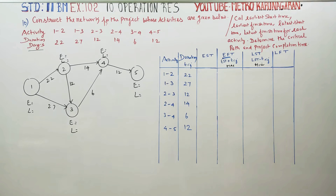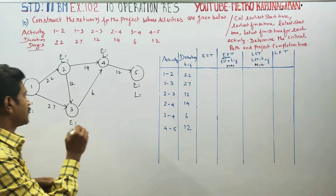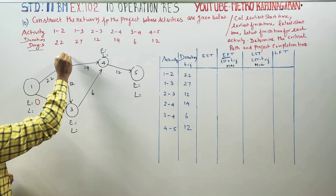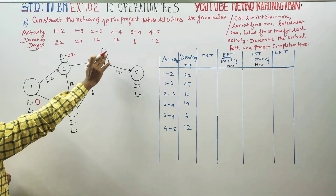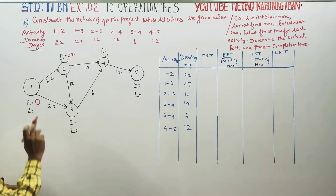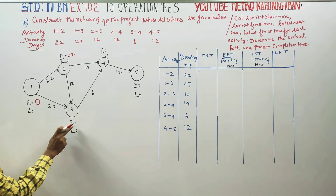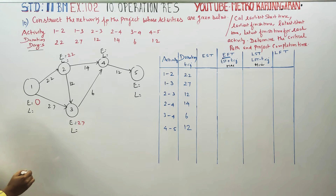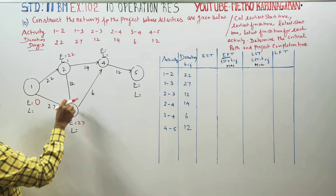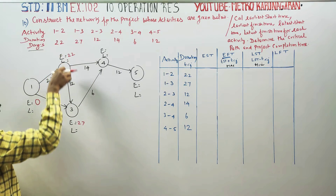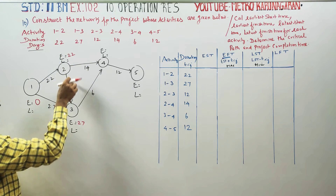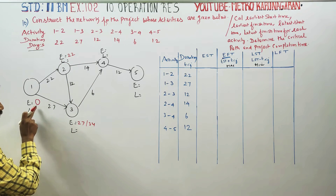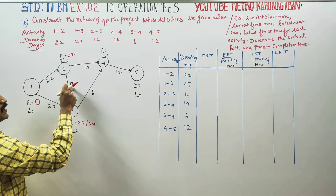The earliest starting time is 0. We will start with 0 days. 0 plus 22 gives the earliest value of 22 for node 2. For node 3, 0 plus 27 is 27. Then the next track is 22 plus 12, which gives 34. Now you can see 22 plus 12 is 34.